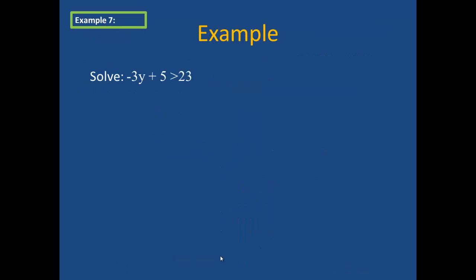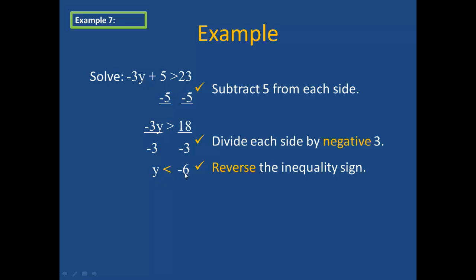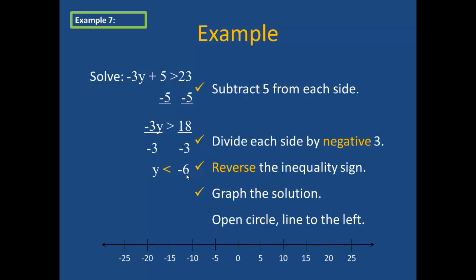In example 7, I have another two-step equation: negative 3y plus 5 is greater than 23. In order to solve this, I subtract 5 from both sides, which yields negative 3y is greater than 18. I then divide each side by negative 3. Because I divided by a negative, I am going to reverse the inequality sign, and my answer will be y is less than negative 6. This means that my solution set is all numbers smaller than negative 6. To graph the solution, I will use an open circle with a line pointing to the left.